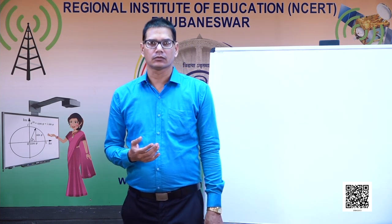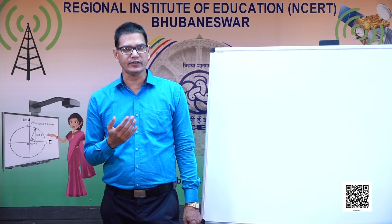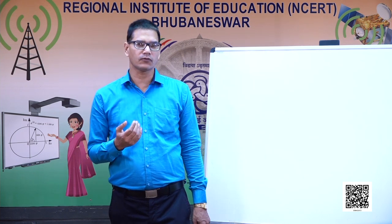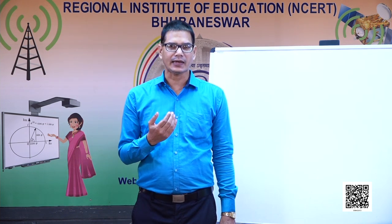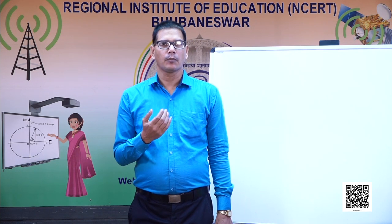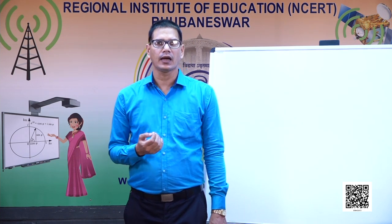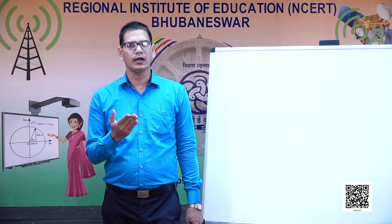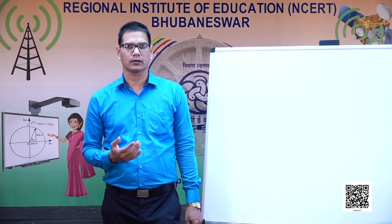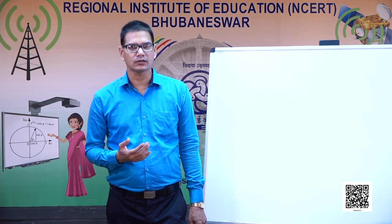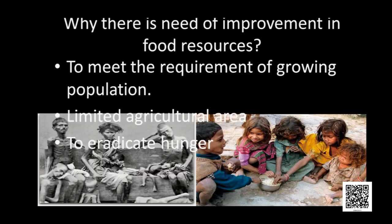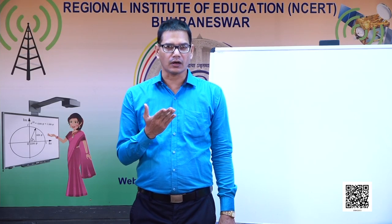Now, what are the sources of food? The sources of food are plants and animals. Plant products we get from agriculture, and animal products we get from animal husbandry. Now the question is: why do we need improvement in food resources?